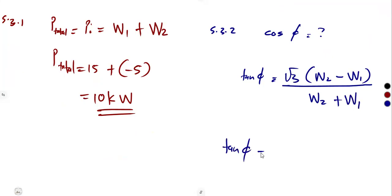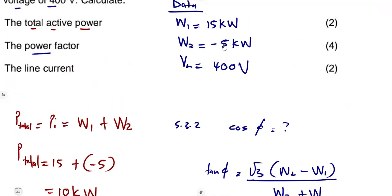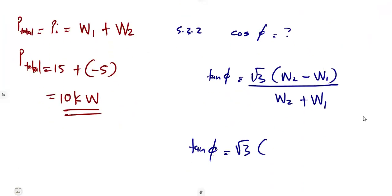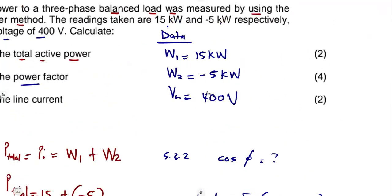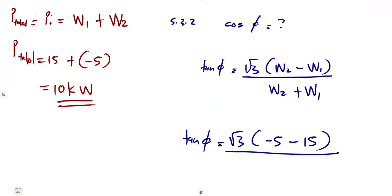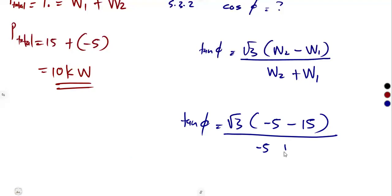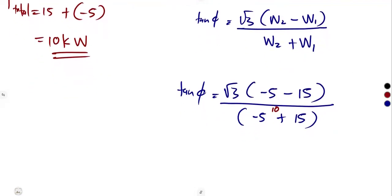We're just going to substitute our values so that we can calculate our angle theta. That's the square root of three times wattmeter two, which according to us is negative 5, minus wattmeter one which is 15. So that's negative 5 minus 15 over the sum of these two, which we already calculated is 10.